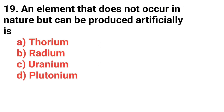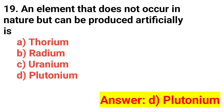Question number nineteen: An element that does not occur in nature but can be produced artificially is? The answer is option D: plutonium.